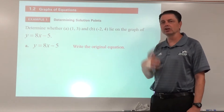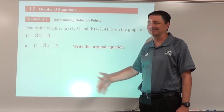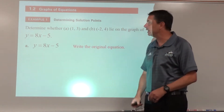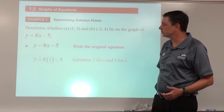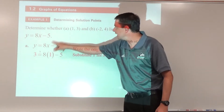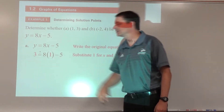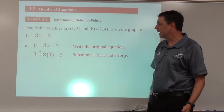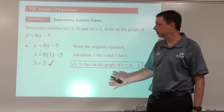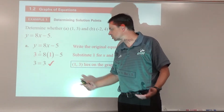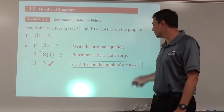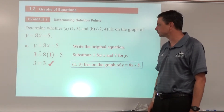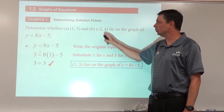We write the original equation, then substitute x = 1 and y = 3 to see if it makes a true equation. If we evaluate, the left side is 3 and the right side is 3 — check! The point (1, 3) does lie on the graph of that equation.